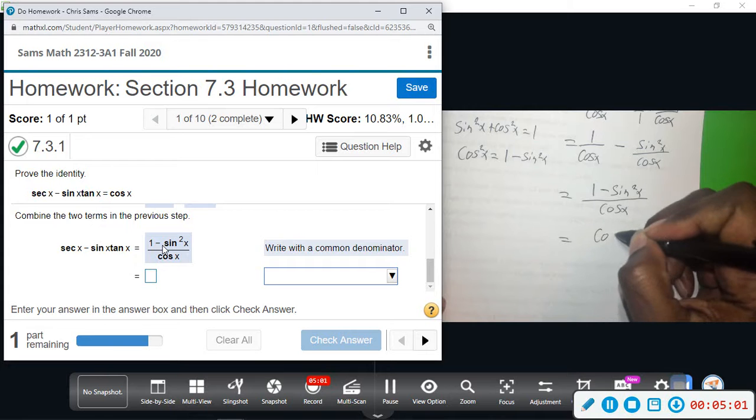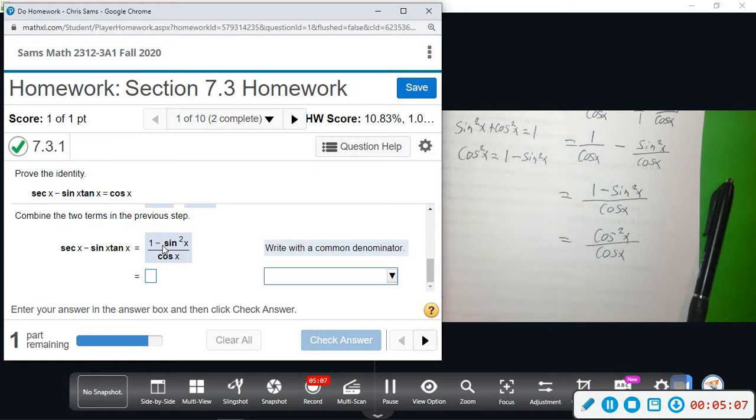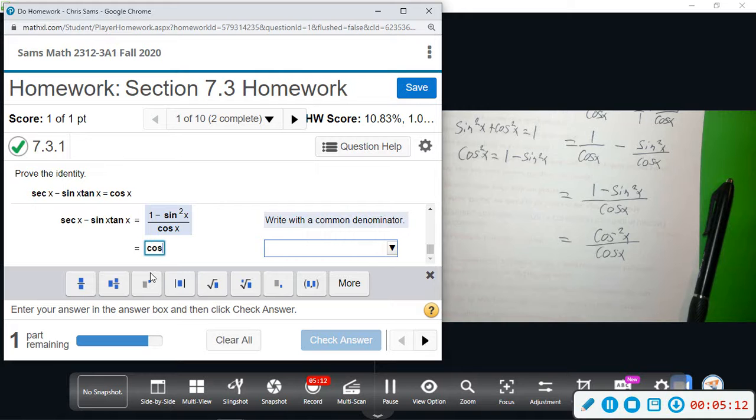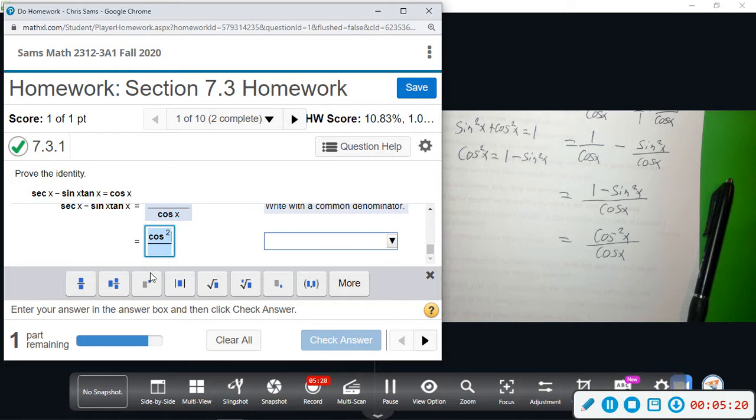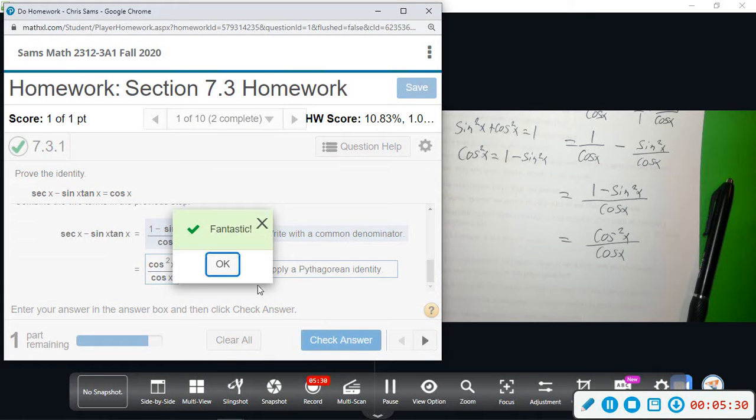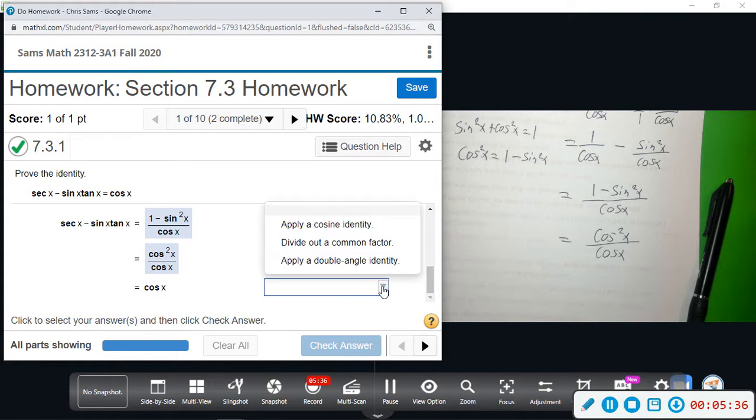So we get cosine squared x divided by cosine x. That's going to be Pythagorean identity: cosine squared x divided by cosine x. And then lastly we will reduce, divide out one of the cosines, by dividing out the common factor.